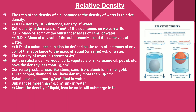The density of water is 1 g/cm³ at 4°C. Substances like wood, cork, vegetable oils, kerosene, and petrol have densities less than 1 g/cm³, so they float on water. Substances like stone, sand, iron, aluminium, zinc, gold, silver, copper, and diamond have densities greater than water, so they sink. The denser the liquid, the less a solid will submerge in it.